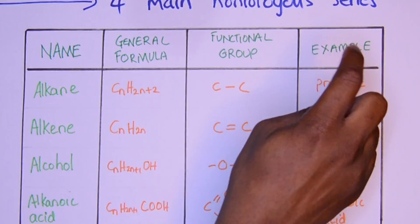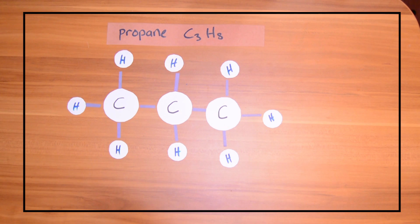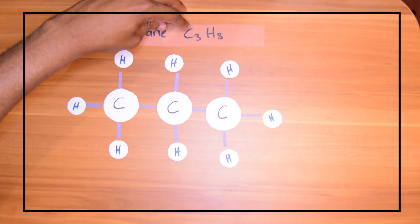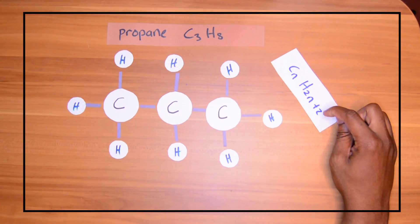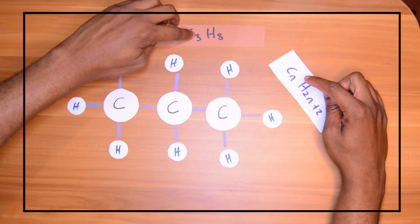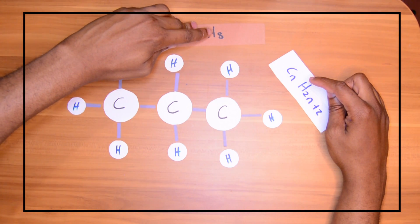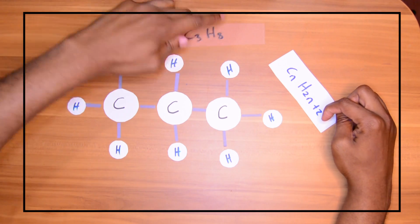All right, let's look at some examples. So we have propane. The functional group is the presence of exclusively single bonds. And if you take a look at the formula C3H8, remember CnH2n+2 is the general formula. So n was 3. 3 by 2 is 6 plus 2 is 8. Correct.